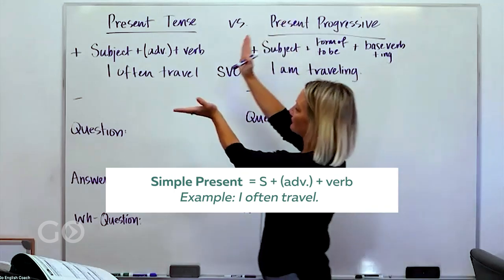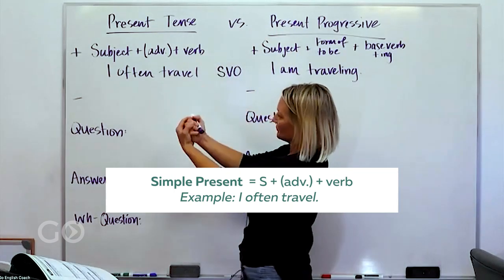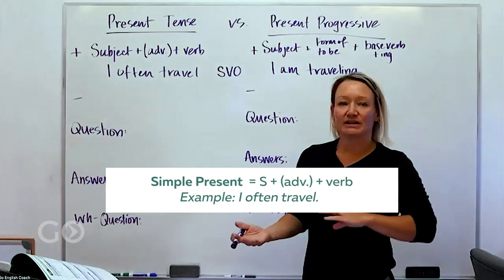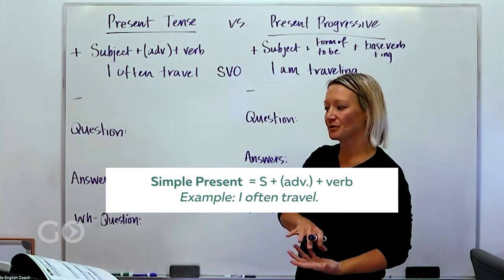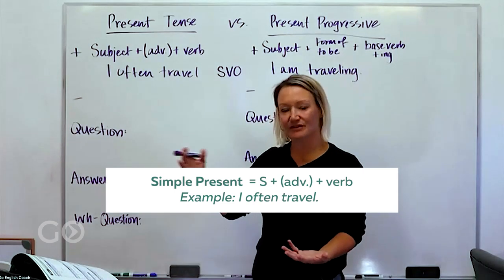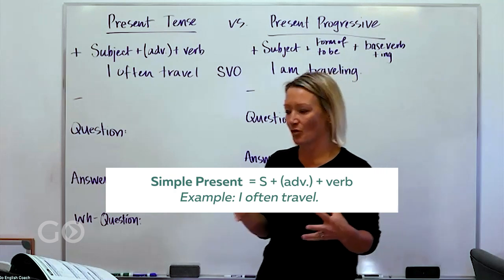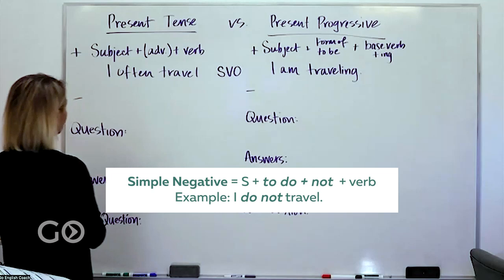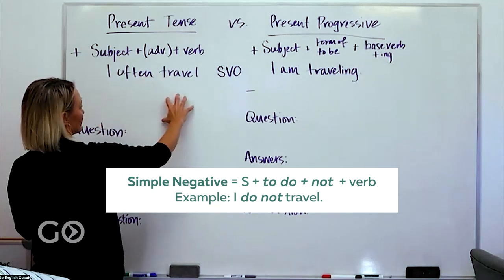In more advanced parts of English maybe like poetry or very high level writing or academic writing sometimes those things can change, but in general we use this order, subject verb object. So this is the affirmative or the positive, pretty easy: I often travel. If we have to use the negative then it's a little bit more work.